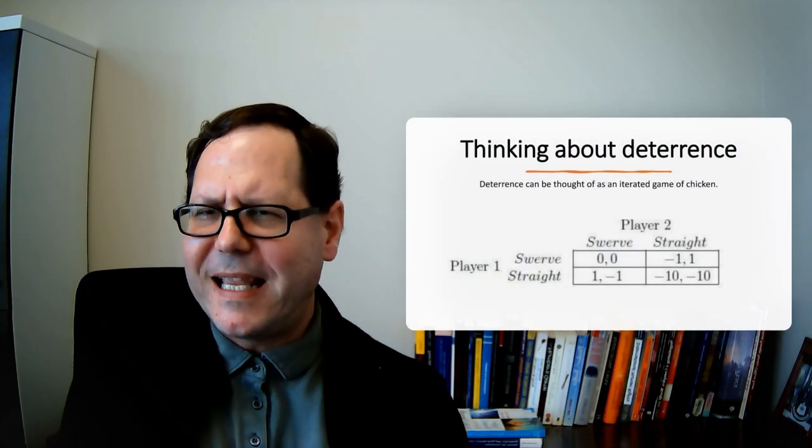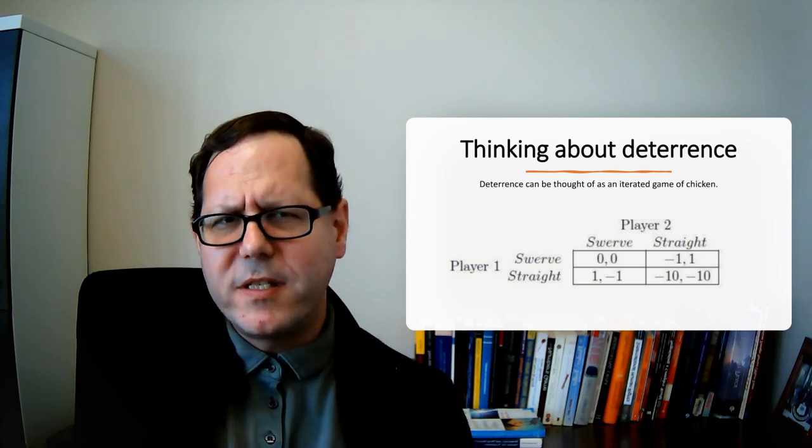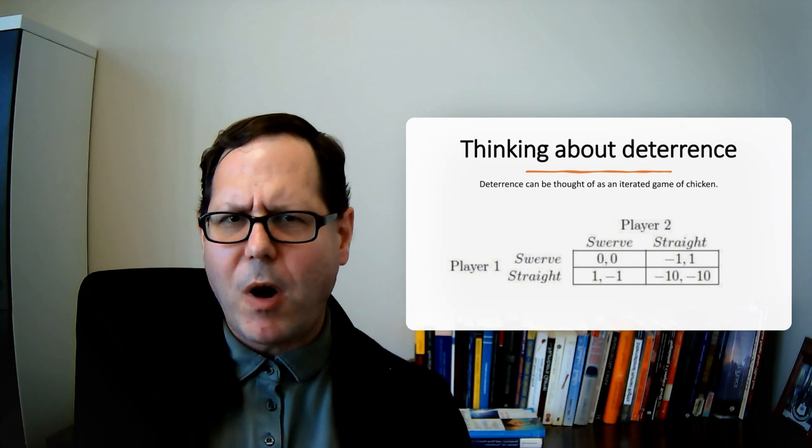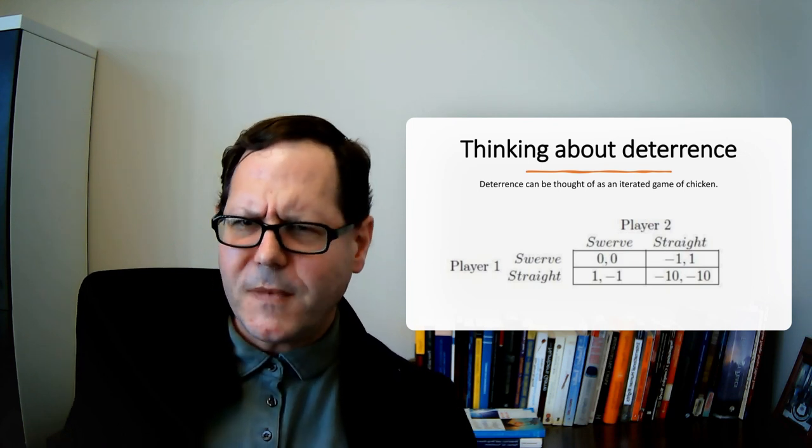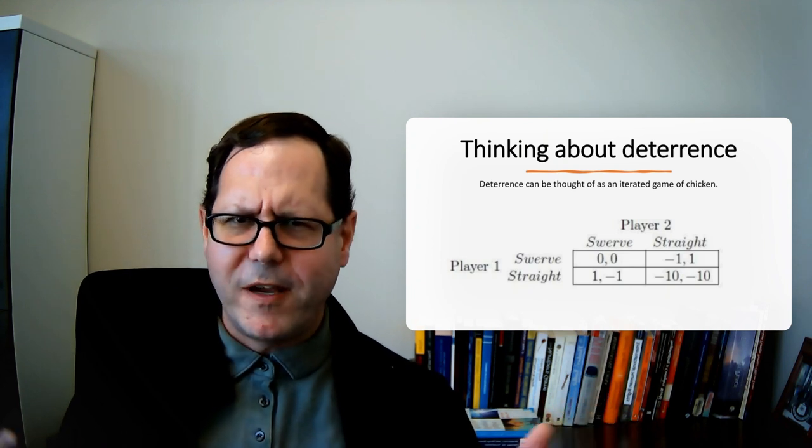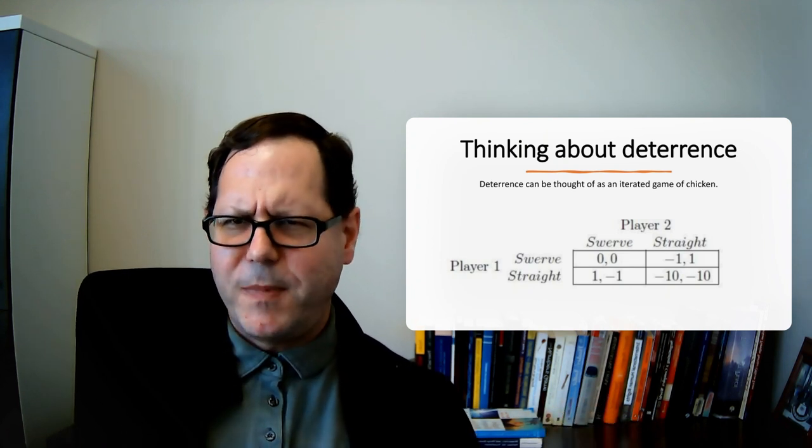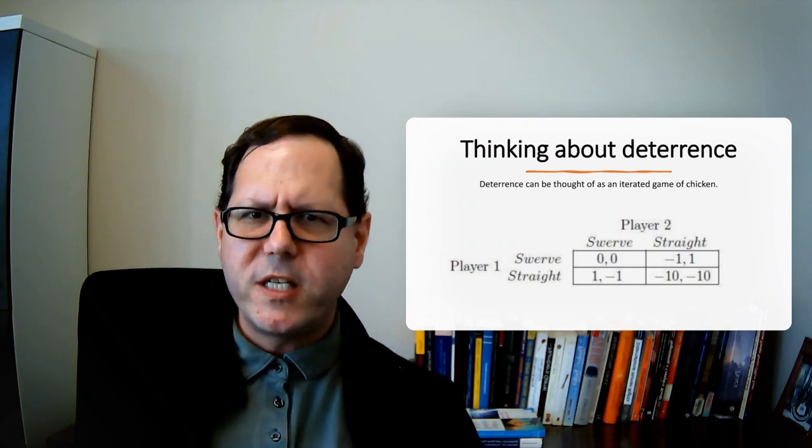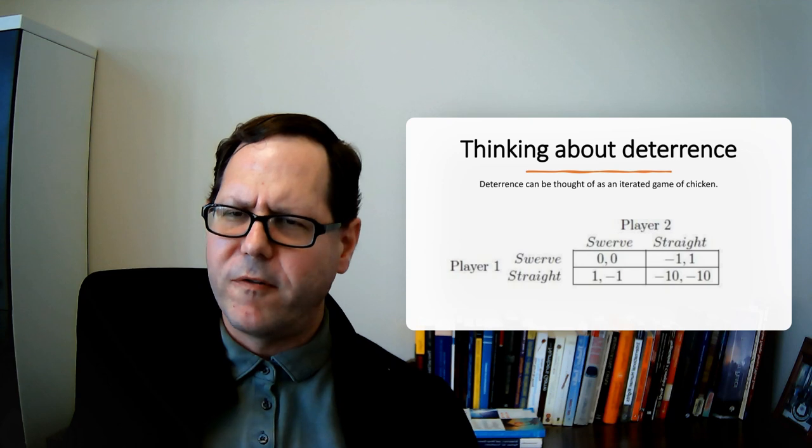We have a game theoretic kind of model that we use to think about this idea of deterrence, and it's the game of chicken. Folks should probably be familiar with this. This is the classic story of you have two people, cars driving toward each other at high speeds, a test of wills. Each driver has to make a choice about whether they swerve or whether they go straight.